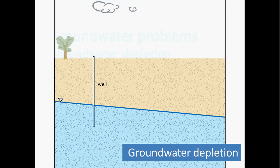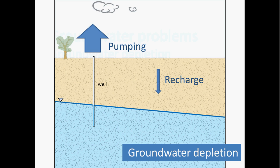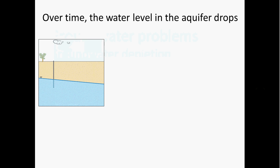As we discussed previously, we rely heavily on groundwater resources as a source of drinking water and irrigation water. If the rate at which we pump water out of an aquifer exceeds the rate at which that aquifer recharges, then groundwater storage is depleted. Over time, groundwater depletion can cause the level of water in an aquifer to drop.